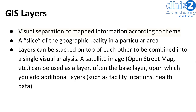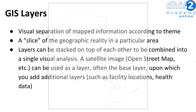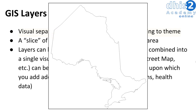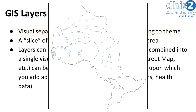For example, we can start with a satellite image and then add additional layers on top of this, such as health facility locations or health data. We can also think of different slices of geographic reality — for example, taking on certain land masses, then placing on rivers and lakes, next putting on the roads, et cetera.